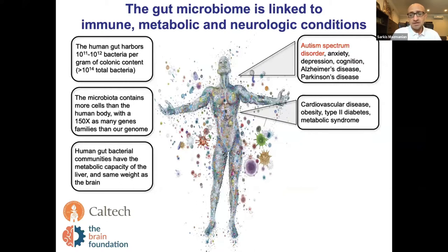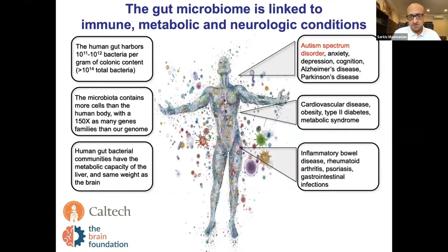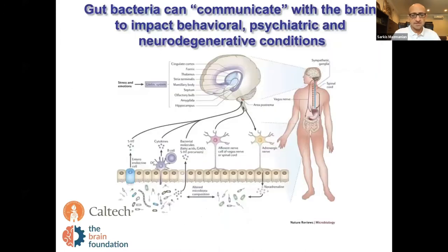Regarding metabolic disorders, obesity, type 2 diabetes, and cardiovascular disease have been associated with the microbiome. Again, this is emerging human work, but a lot of this is based on animal models. And of course, immunologic responses — when we think about bacteria, we often think about how the immune system interacts with them. In the context of the microbiome versus classical infectious disease, there's growing evidence that the microbiome helps tune or educate immune responses that may impact inflammatory bowel disease, autoimmune disorders, and gastrointestinal infections.